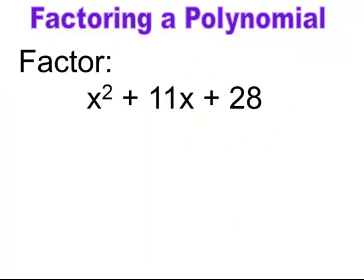Pause and try. The rule is (x + )(x + ). Find factors of 28 that add up to 11, and we get 4 and 7. You could also write the 7 first and the 4 last.